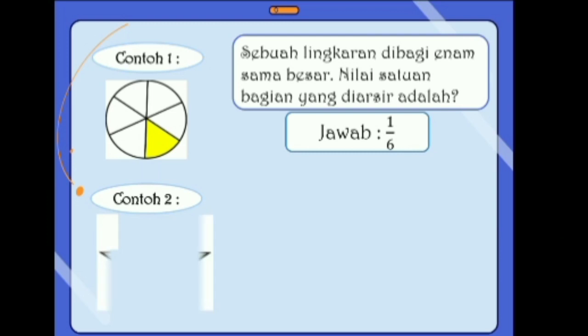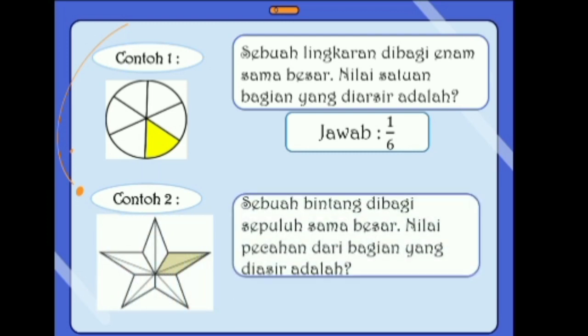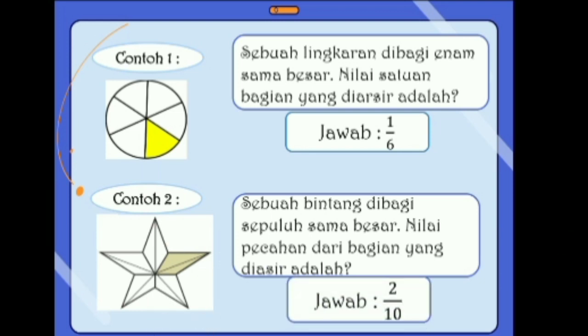Selanjutnya ada contoh yang kedua. Sebuah bintang dibagi 10 sama besar. Nilai pecahan dari bagian yang diarsir adalah? Yang diarsir, yang Miss beri warna, berapa? Ya benar, yang diarsir adalah dua. Jawabannya adalah 2/10. Nilai pecahan dari bagian yang diarsir adalah dua, dan sebuah bintang dibagi 10 sama besar.